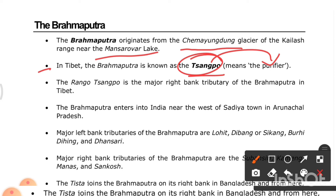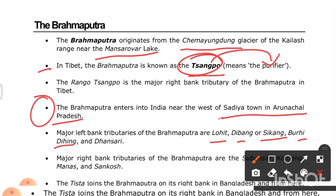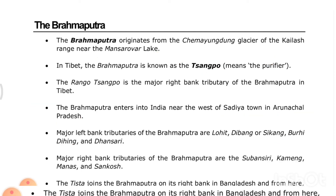The Brahmaputra enters India near the west of Sadiya town in Arunachal Pradesh. The major left-bank tributaries of the Brahmaputra are the Lohit, Dibang, Subansiri, Burhi Dihing, and Dhansiri. The major right-bank tributaries are the Subansiri, Kameng, Manas, and Sankosh.